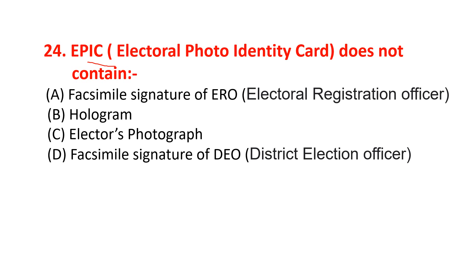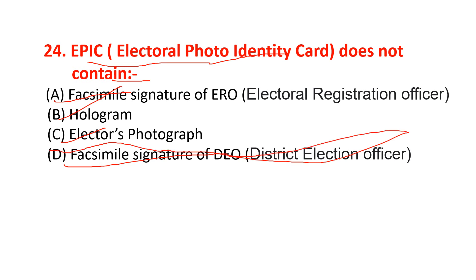The EPIC (Electoral Photo Identity Card or Voter ID Card) does not contain which of the following? It contains a facsimile signature of the ERO, a hologram, and the elector's photograph, but it does not contain a facsimile signature of the DEO. So the correct option is option D — facsimile signature of DEO.